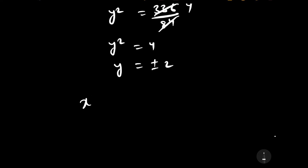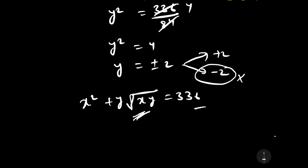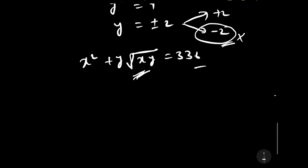Our original equation contains the square root of xy, so we have two solutions for y: plus 2 and minus 2. We must reject y equals minus 2, since the square root of a negative number is not permissible for real solutions. Therefore, the only valid value is y equals positive 2.